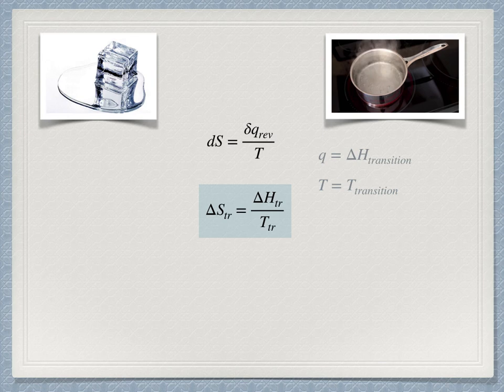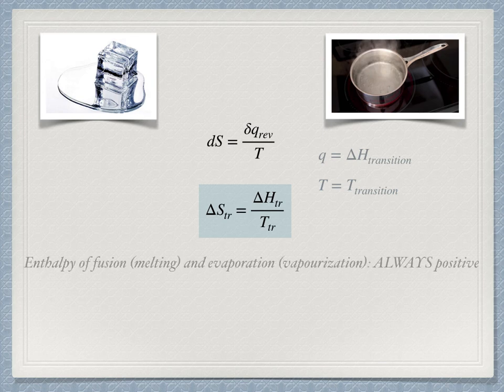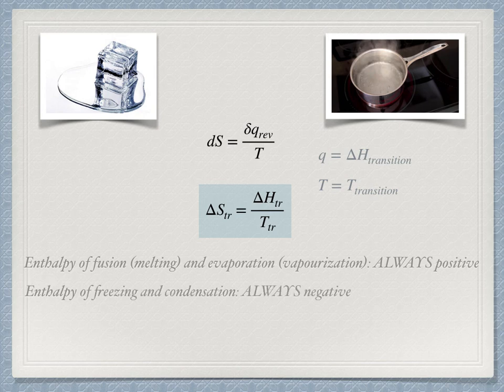A key to these values is to remember that melting or vaporizing always requires the input of energy, and so the enthalpy change and the entropy change must both be positive. Conversely, freezing or condensing must always be negative since energy must always be removed to drive the phase change.